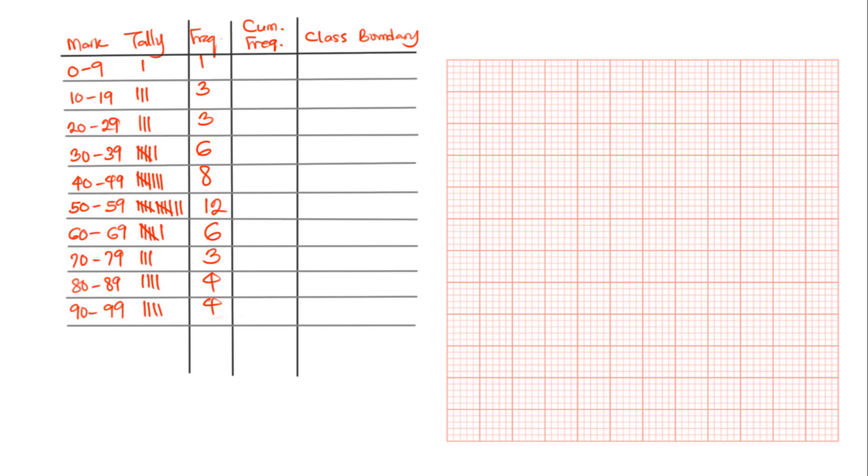We get the cumulative frequency by adding sequential entries of the frequencies. In the first case, we have just 1. In the second case, we have 1 plus 3 is 4. In the third case, we add 3 to 4 to give 7. In the next case, we have 7 plus 6 is 13. Then 13 plus 8 is 21. The next one, 21 plus 12 is 33. The next one, 33 plus 6 is 39. 39 plus 3 is 42. 42 plus 4 is 46. 46 plus 4 is 50. These are the cumulative frequency data that is needed for us to plot our graph.